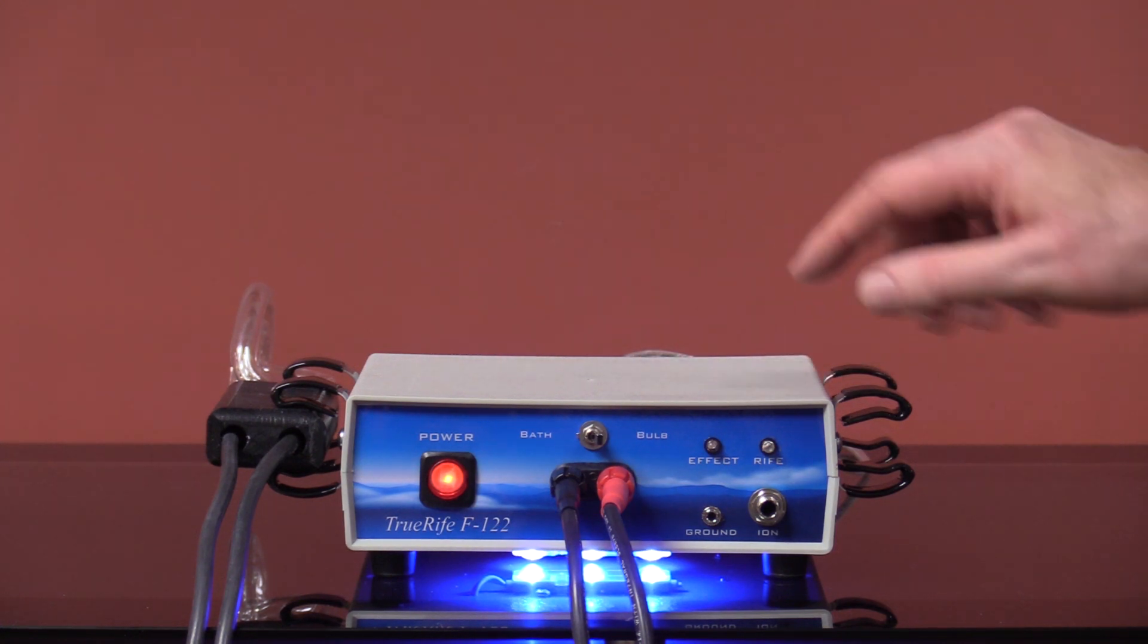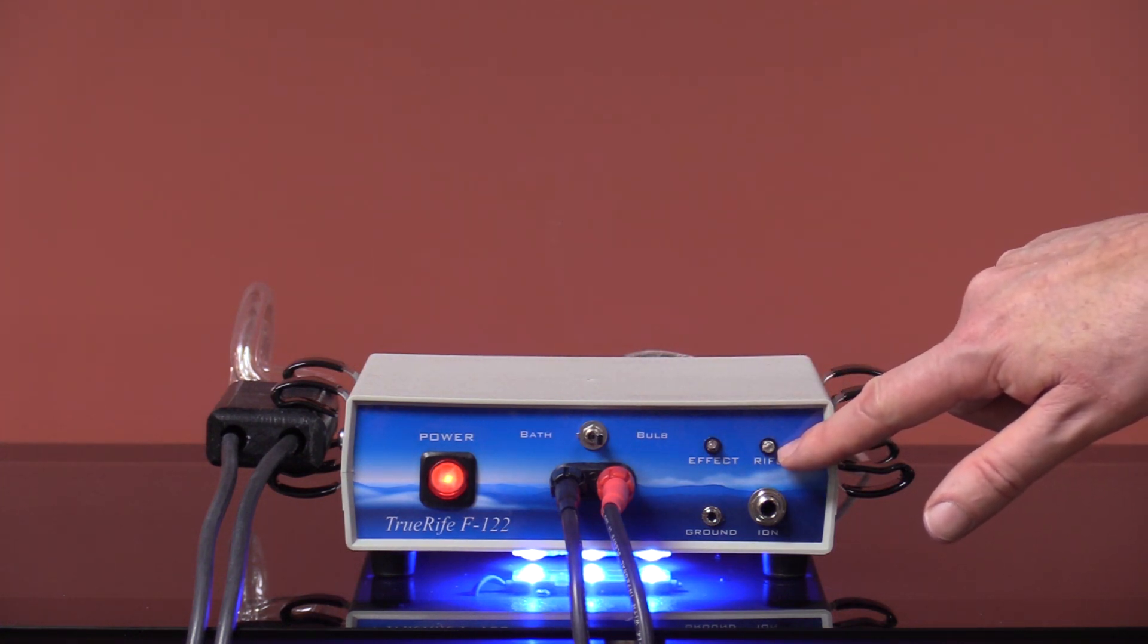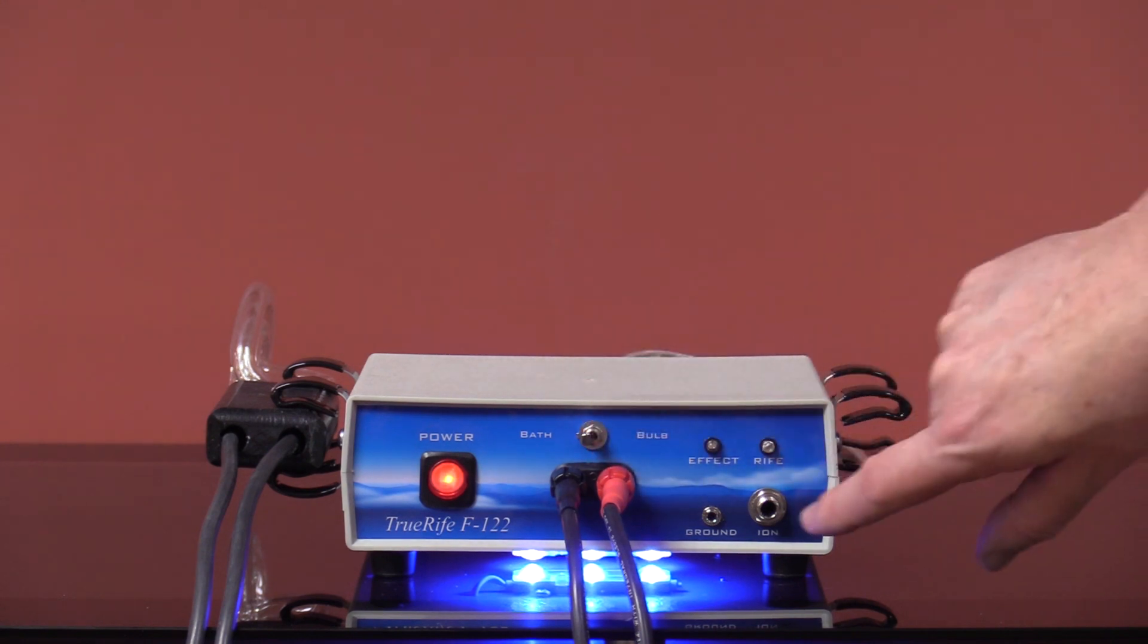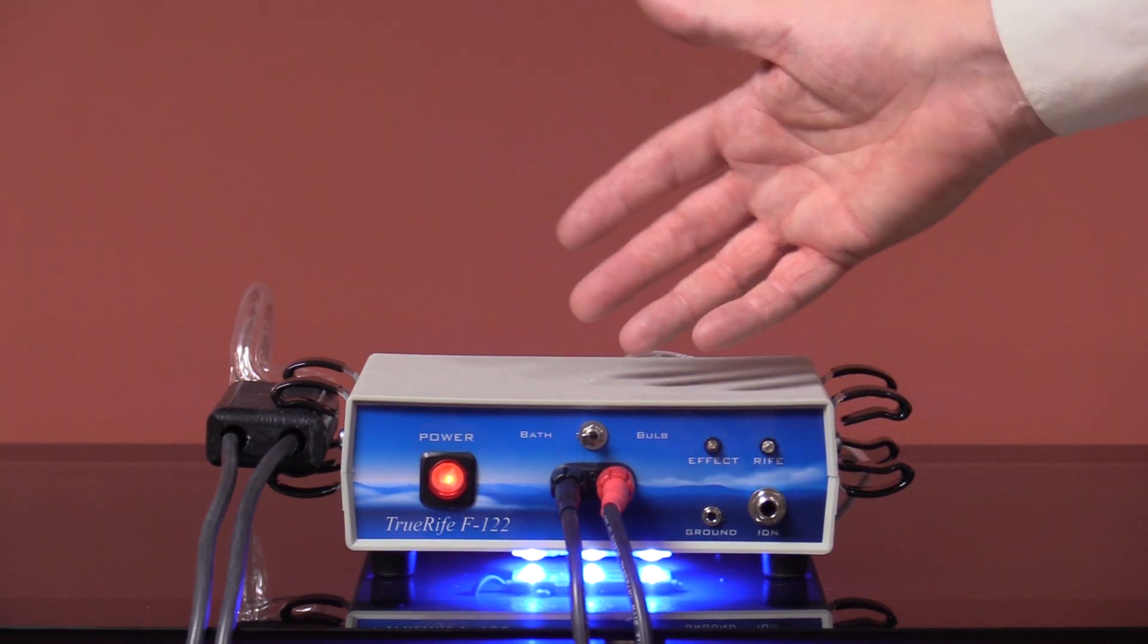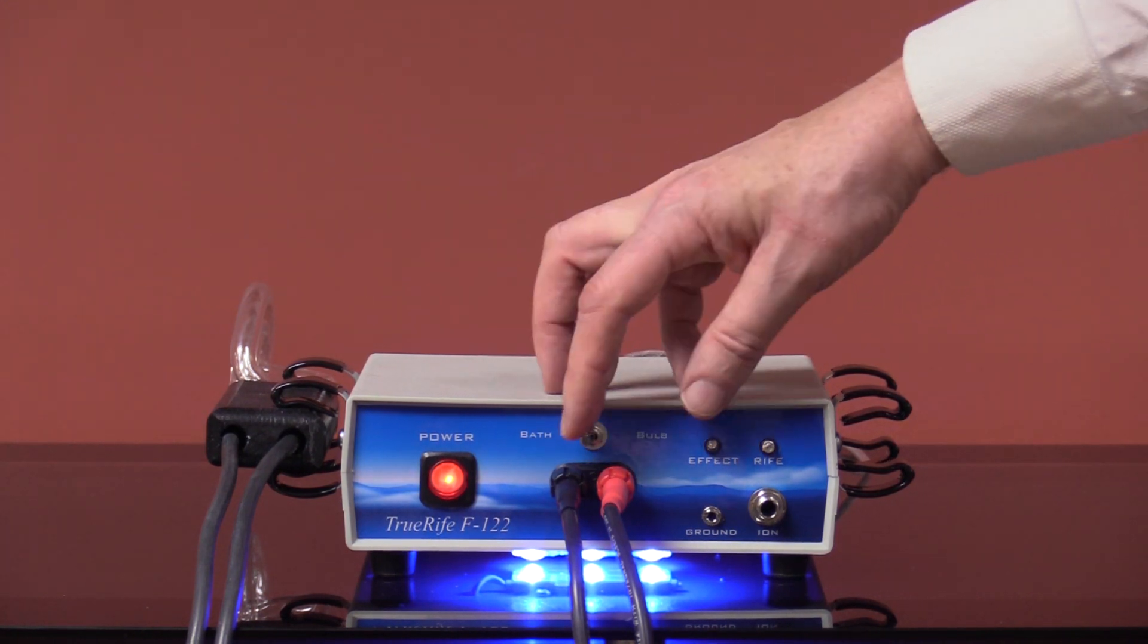When you're running a bulb program, this light will light up. It may pulse or it may glow steady, depending on the program. The same way if you're on the bath output, if you plugged in an Ion ProWave here, it would do the same thing. It may pulse some programs or it may run steady.